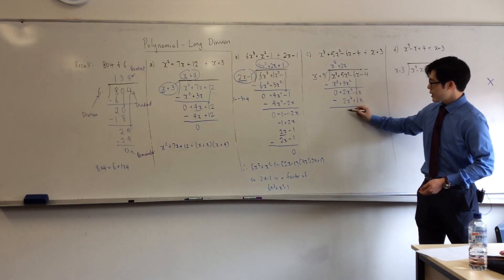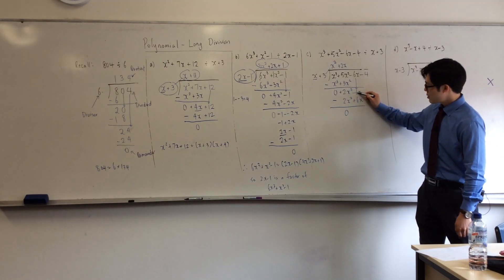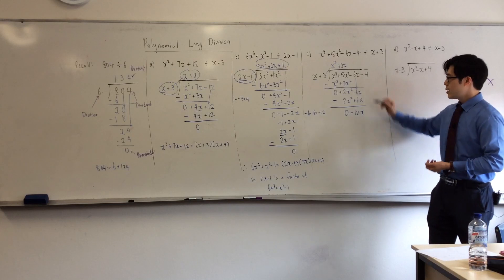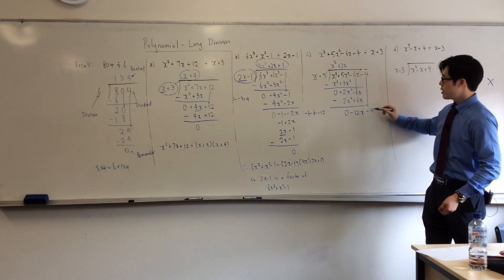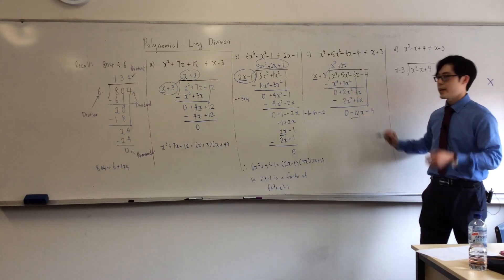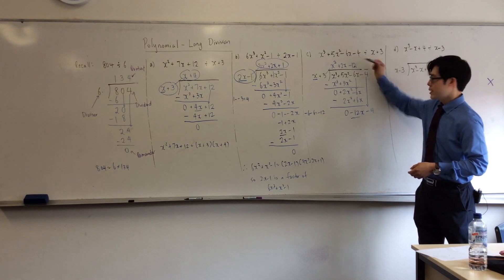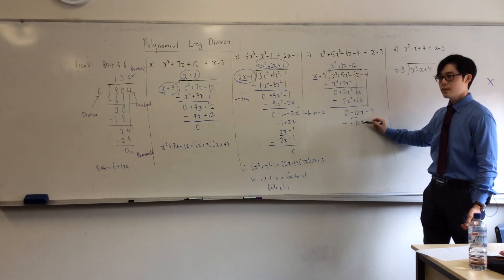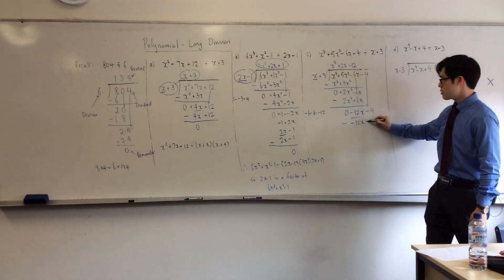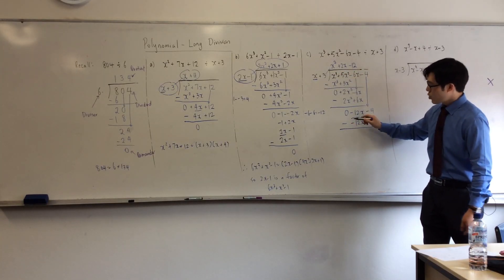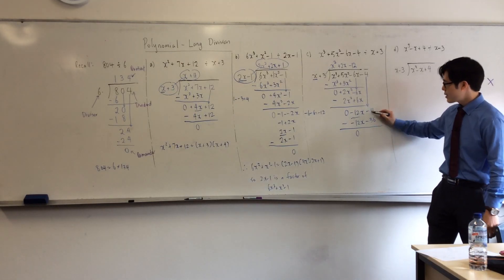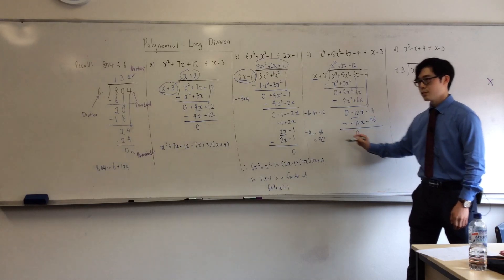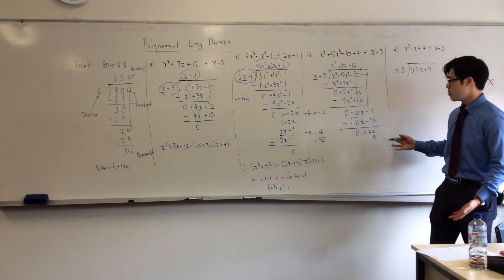Let's keep going. That's 0. Minus 6 minus 12 gives minus 12x. After you do that, bring it down. Ask yourself the same question: how many x's go into minus 12x? Minus 12. So x times minus 12 is minus 12x. Then times with the second term: 3 times minus 12 is minus 36. The first one is always going to be 0. Now, minus 4 minus minus 36 is plus 32 — because minus 4 plus 32. So, girls, this is your remainder. You can't do any more than that.